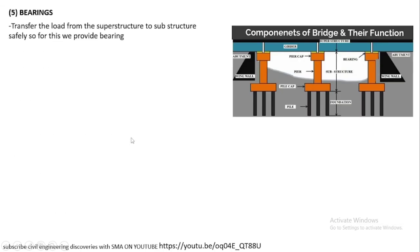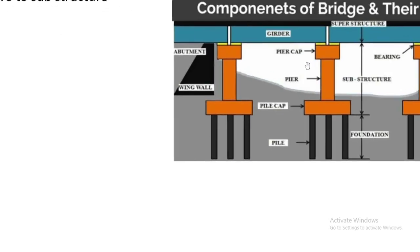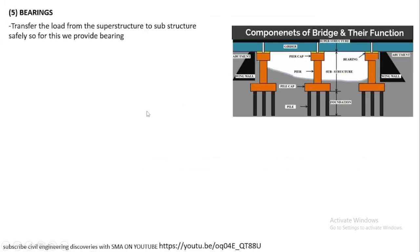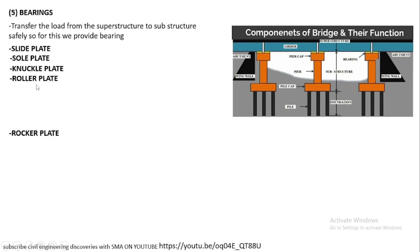Bearing basically transfers the load from the superstructure to the substructure safely, which is why we provide bearings. Looking at the diagram, above the pier cap, two or three bearings are provided. When the load comes on the superstructure, the bearing transfers it from the superstructure to the substructure safely, also preventing cracks. Bearing is further divided into these types: slide plate, sole plate, knuckle plate, roller plate, and rocker plate.